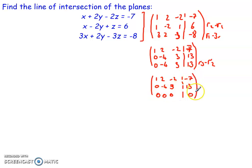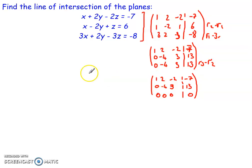This bottom row of zeros is redundant — we have 0 equals 0, meaning that third equation gives no new information. We essentially have two equations in terms of three variables: x, y, and z in the first row, and only y and z in the second. Since two equations cannot solve for three variables, there's an infinite number of solutions. We therefore set up parametric equations to solve this, similar to what we did when finding the equation of a line in 3D space.